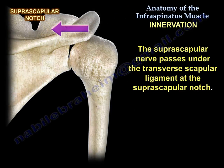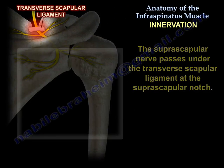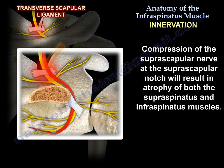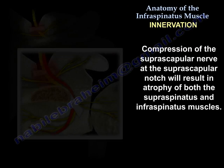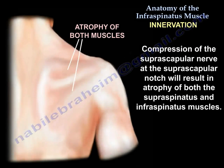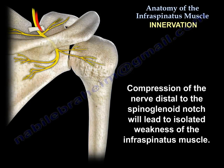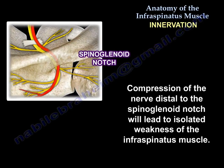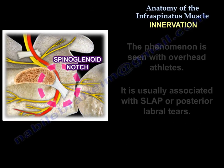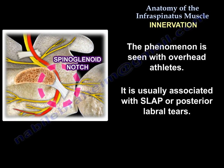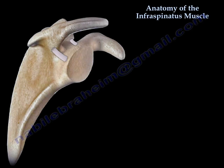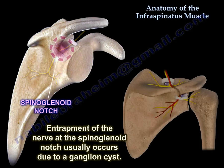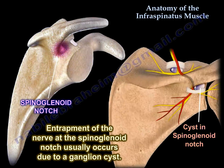Compression of the nerve at the suprascapular notch will result in atrophy of both the supraspinatus and the infraspinatus muscles. Compression of the nerve distal to the spinoglenoid notch will lead to isolated weakness of the infraspinatus. This phenomenon is seen in overhead athletes, usually associated with SLAP or posterior labral tears. Entrapment of the nerve at the spinoglenoid notch usually occurs from a ganglion cyst.